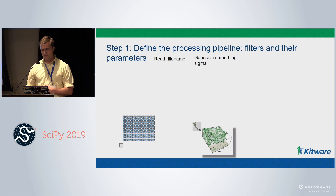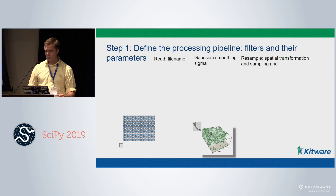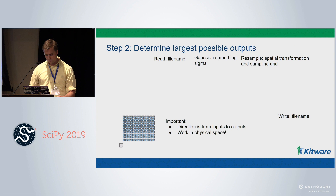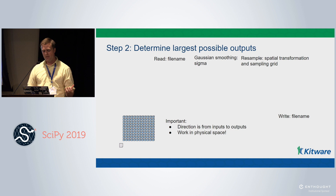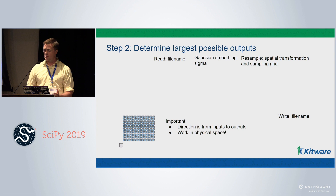We resample the data with the spatial transformation we need to use and the grid we want to create on the output, then write the file back to disk. Something important to be aware of when setting up our pipeline: the direction is from inputs to outputs, and it's very important to work in physical space — especially important for step two.